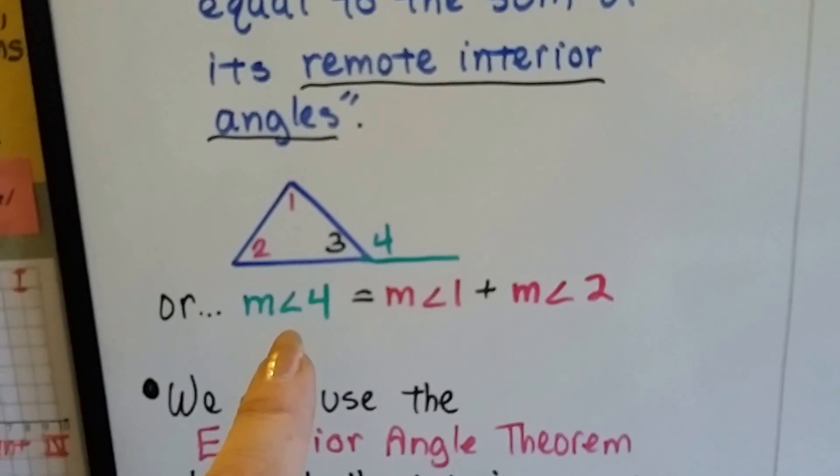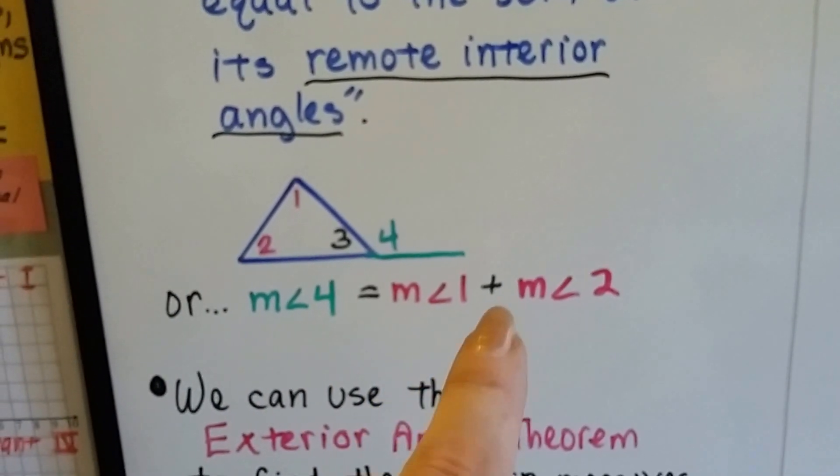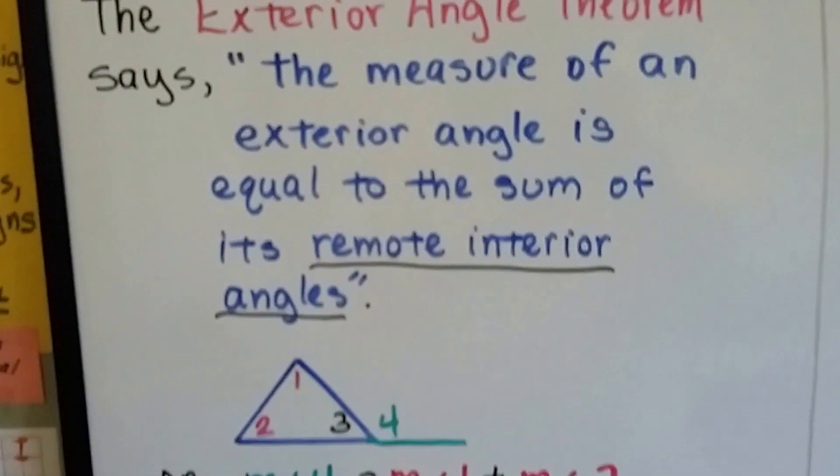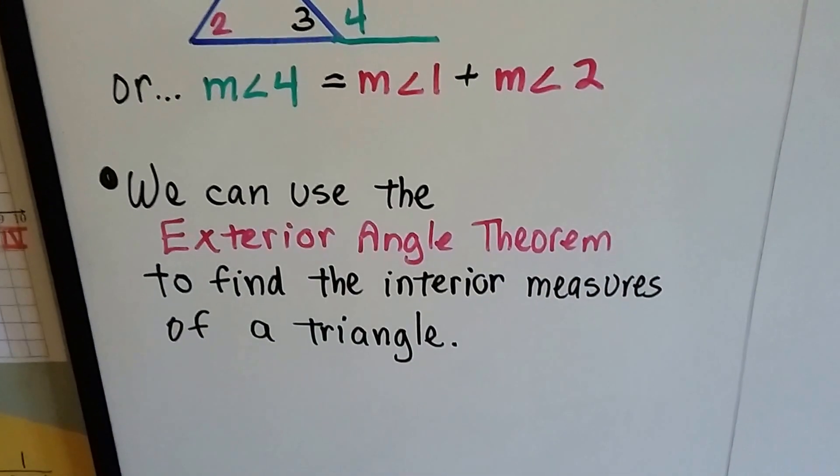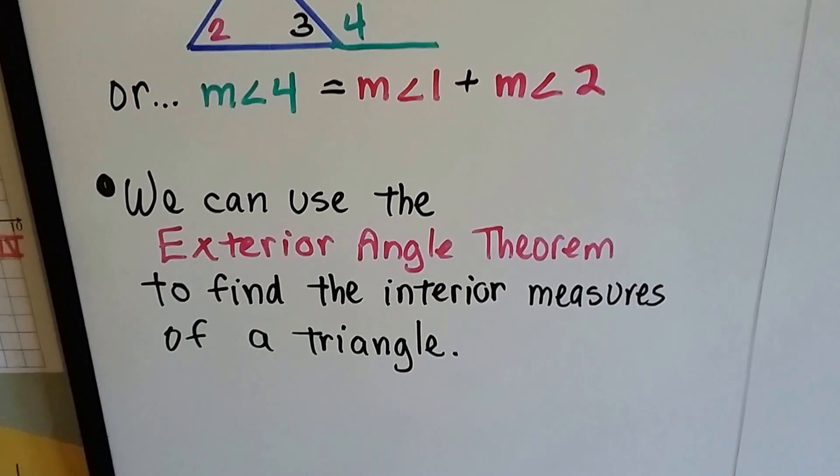So the measure of angle 4 is equal to the measure of angle 1 plus the measure of angle 2. That's what that theorem is saying.